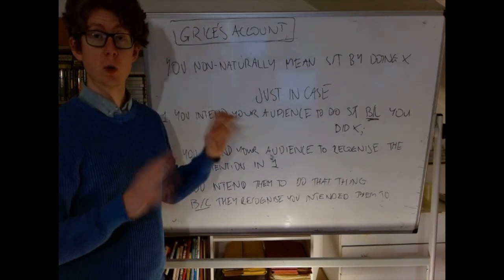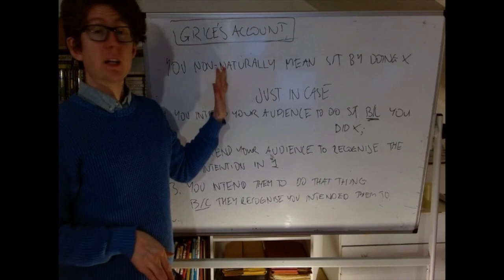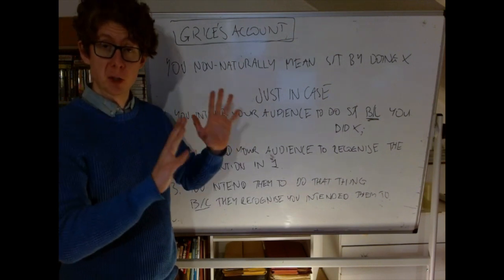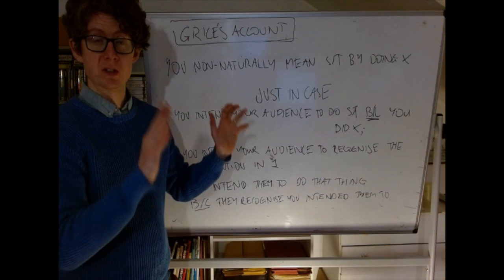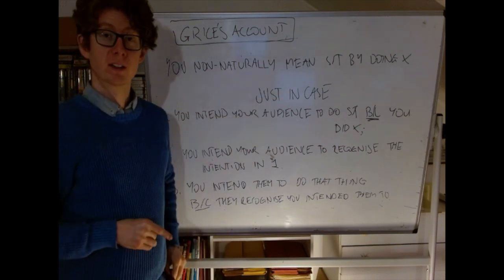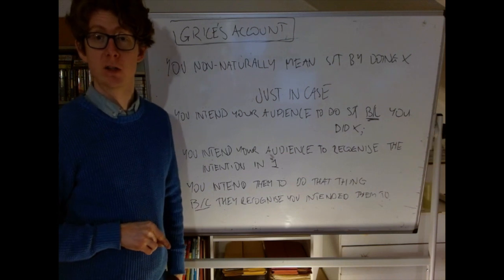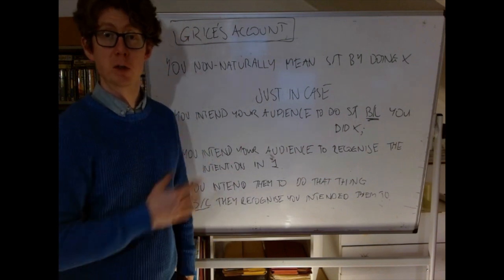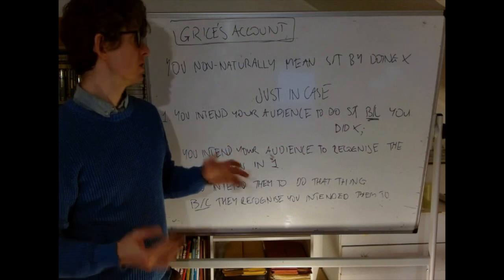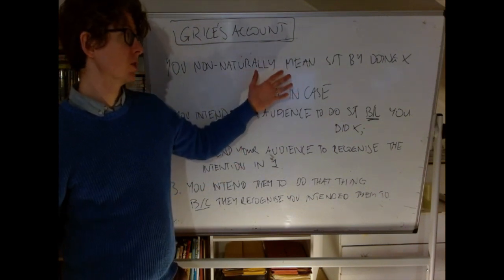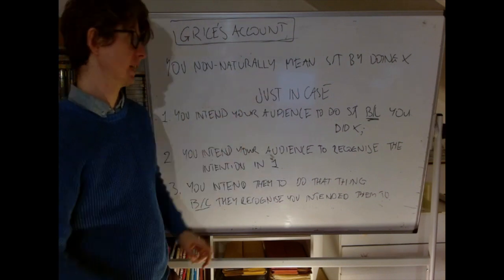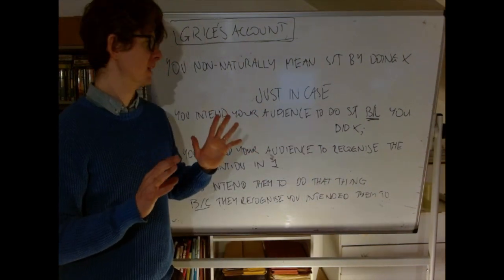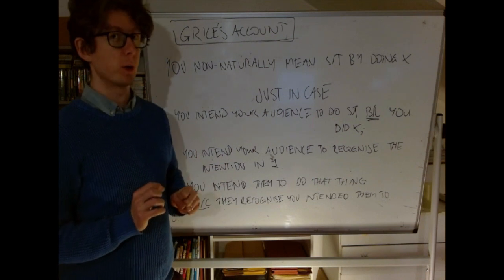What Grice gives us is not quite as specific as what we might want, because we don't want just a general account of what it is to mean something — we want a general account of what it is to mean the particular things in particular cases. For example, when I say 'close the door' or point at the door in a way that clearly indicates I want you to close it, our account should specifically say exactly why I intend for you to close the door and not something else. The idea might be that you non-naturally mean 'close the door' just in case you intend your audience to react by doing that thing, but the details here are a little fuzzy.